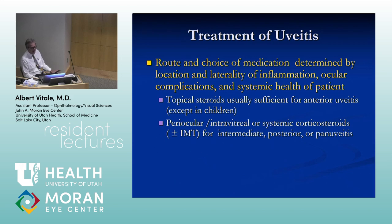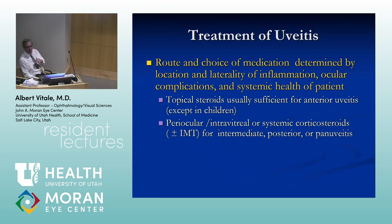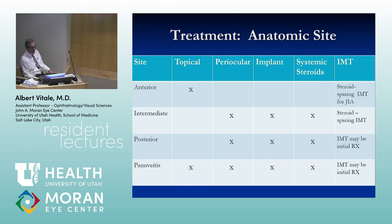The route and choice of medications is really determined by the anatomic location of the inflammation, the ocular complications that you can induce, and the systemic health of the patient. Topical steroids are adequate for purely anterior uveitis but will not penetrate to the back of the eye. Our choices are: topical, periocular, implantable devices, systemic steroids, and immunomodulatory therapy.